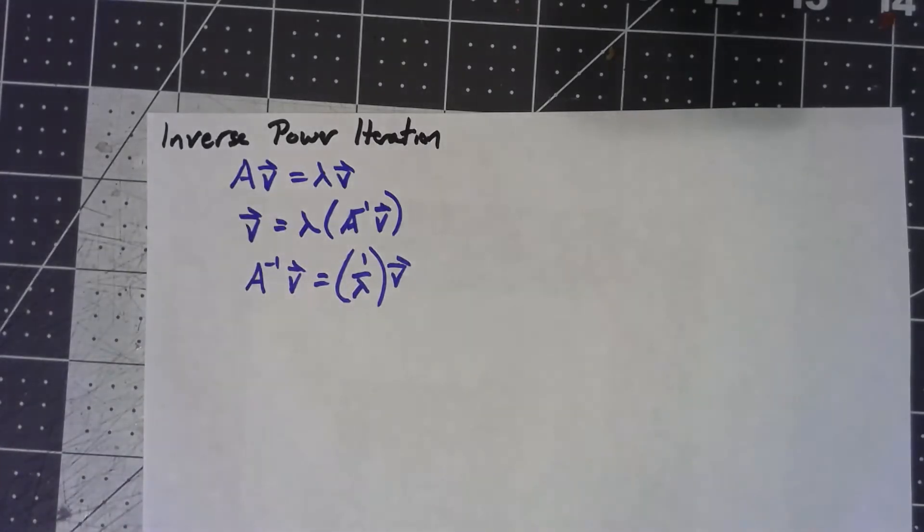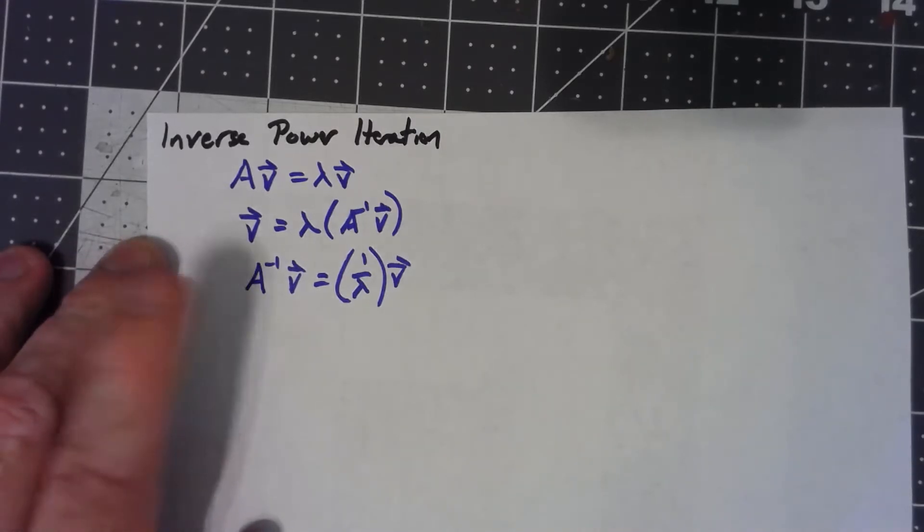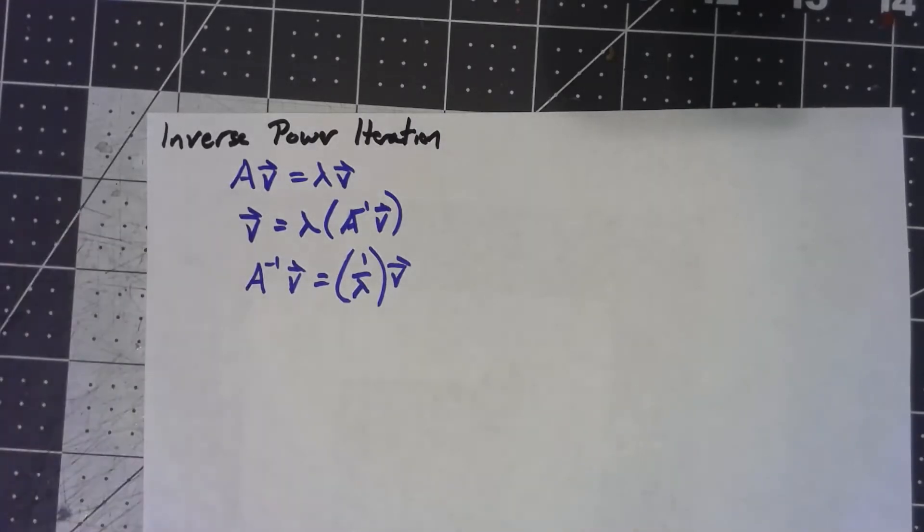Makes perfect sense, but the problem is that to do power iteration we would need to know what A inverse is, and of course finding the inverse to a matrix is a numerically challenging task.